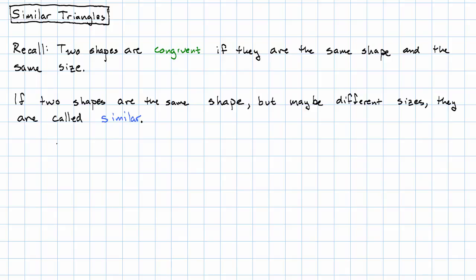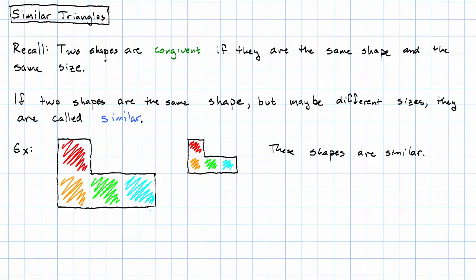Let me show you an example. These two L shapes are similar. You'll notice that every little square here matches up to a 4x4 block over here. They're the same shape, just drawn on different sized grids.